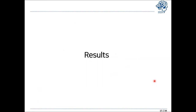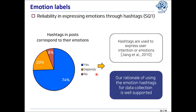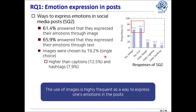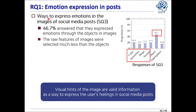Let's talk about the results. Due to time limits, I will briefly explain the findings for RQ1. The results of survey question 1 indicate that our rationale of using emotion hashtags for data collection is well supported. For survey question 2, about ways to express users' emotion in social media posts, we confirmed that the use of images is highly frequent. Survey question 3 confirmed that visual hints of the image are valid information as a way to express the user's feeling in social media posts.